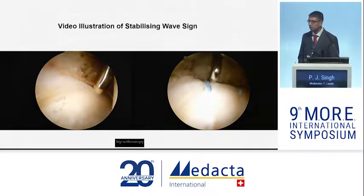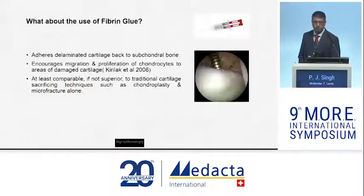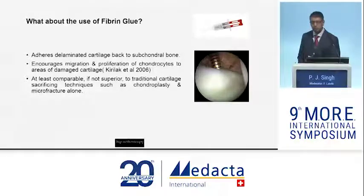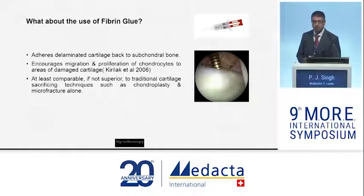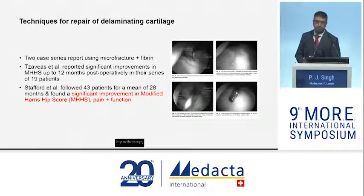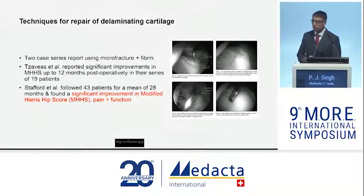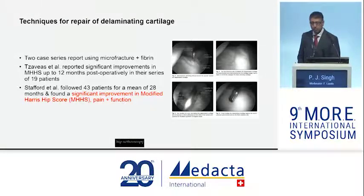What other options do we have? Fibrin glue — as we heard from Chuck — adheres delaminated cartilage to the subchondral bone, encourages migration and proliferation of chondrocytes in damaged cartilage, and is at least comparable, if not superior, to cartilage-sacrificing techniques. Results reported by Richard Willow's group in two series showed reproducible, significant improvement in pain, function, and modified Harris Hip scores.